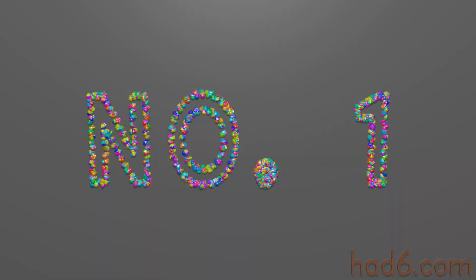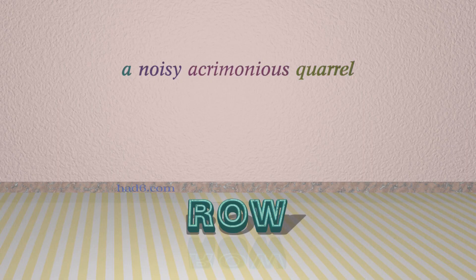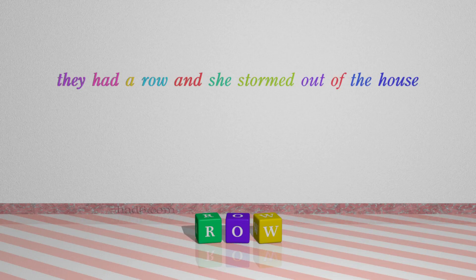Number 1: ROW, which means a noisy acrimonious quarrel. For example: They had a row and she stormed out of the house.